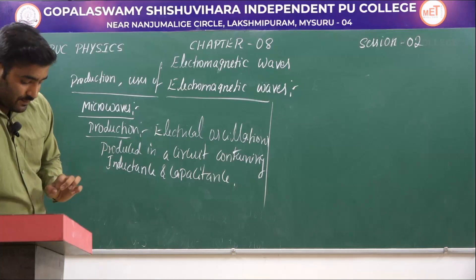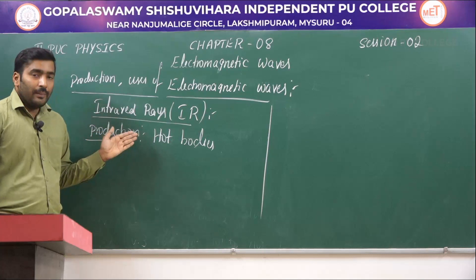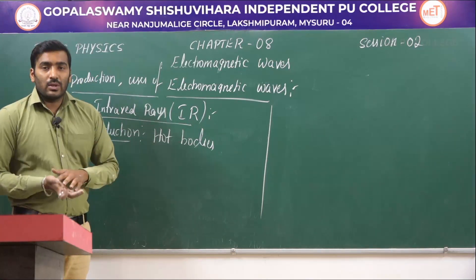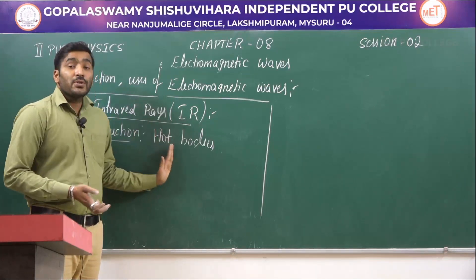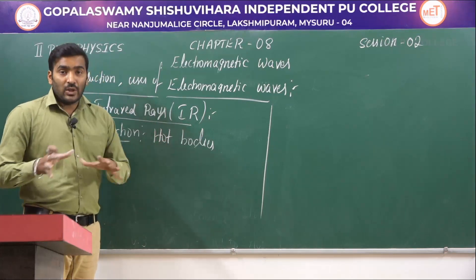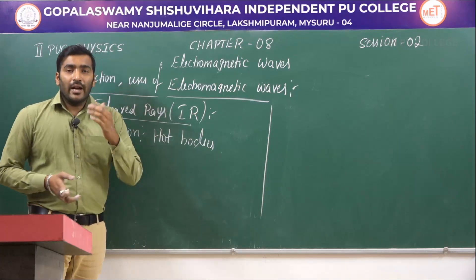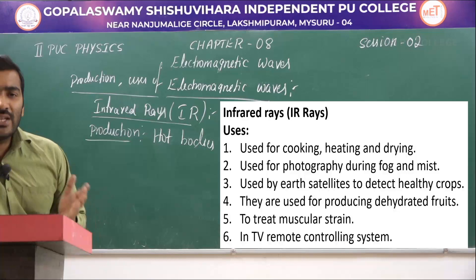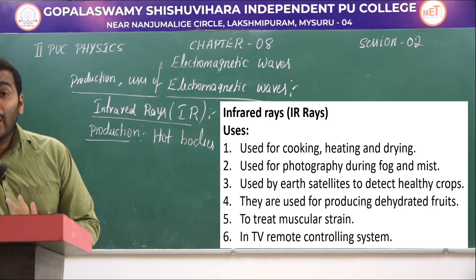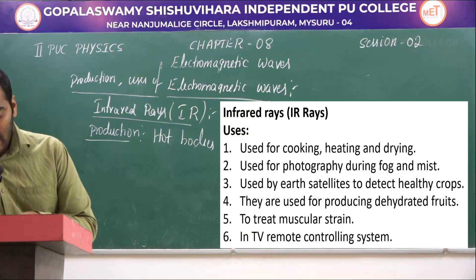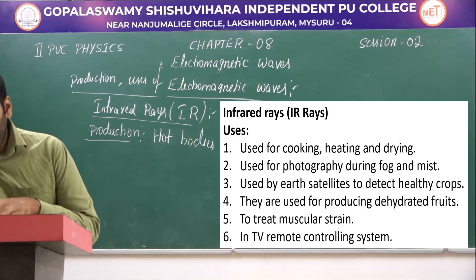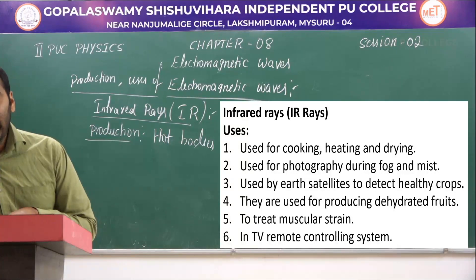Infrared rays are produced by hot bodies, which is why they are also called heat waves — any hot body can emit them. The uses of infrared rays include: cooking, heating and drying, producing dehydrated fruits, detection of healthy crops by earth satellites, photography during fog and mist, treating muscular strain, and use in TV remote control systems.